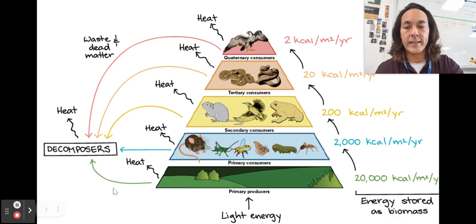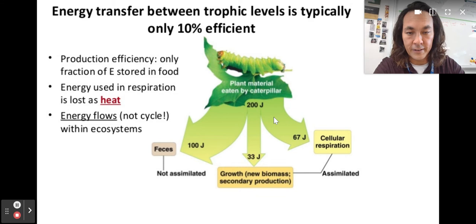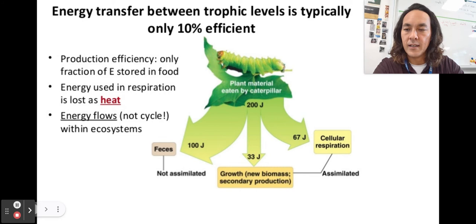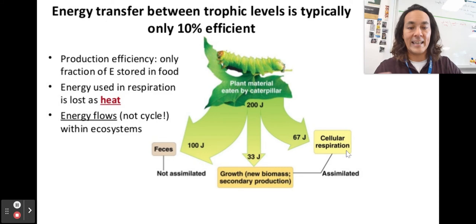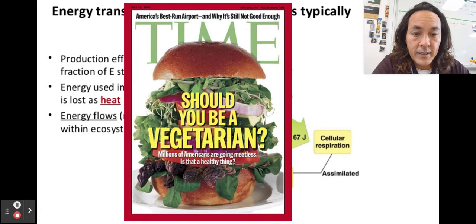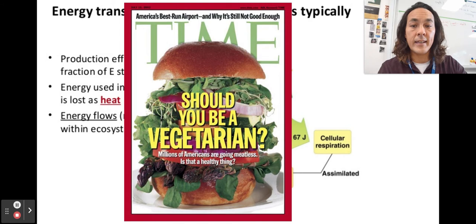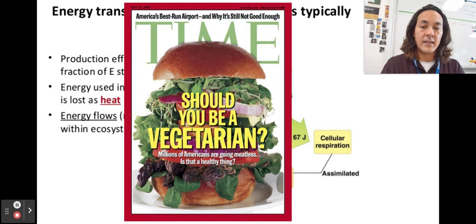Energy transfer is only about 10% efficient. Much of what the caterpillar consumes is lost as waste or used in cellular respiration to generate energy for itself. This raises the question: should you be vegetarian? It takes a lot of grain to feed cows and chickens for us to eat. We could get all the protein we need from plants and could feed far more people on a vegetarian diet — something to think about.